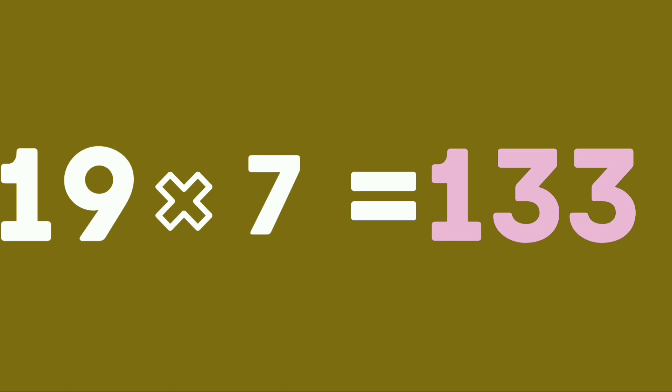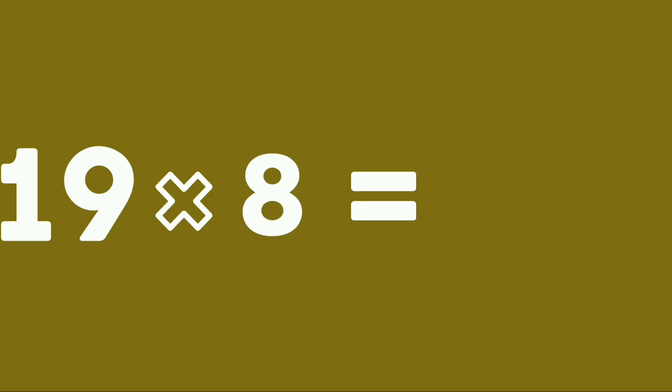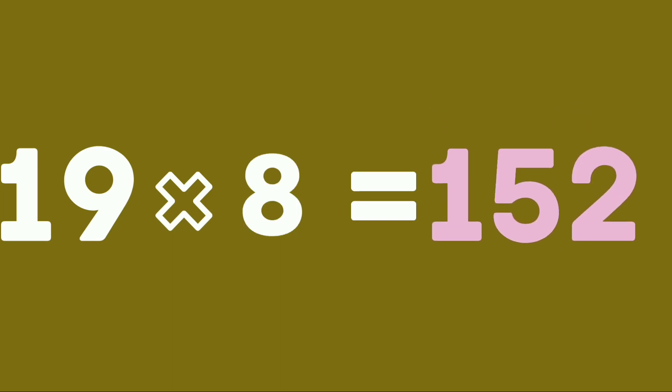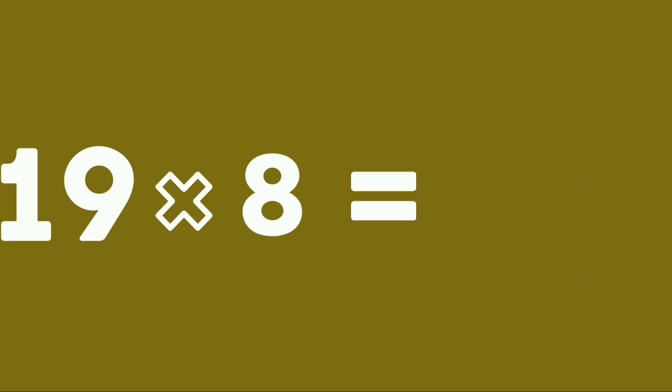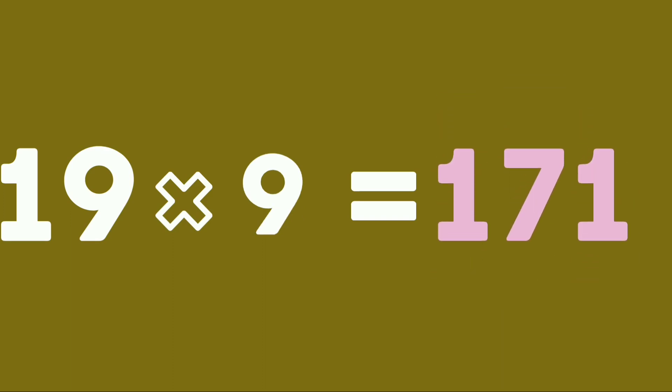Nineteen sevens are one hundred thirty-three. Nineteen sevens are one hundred thirty-three. Nineteen eights are one hundred fifty-two. Nineteen eights are one hundred fifty-two. Nineteen nines are one hundred seventy-one.